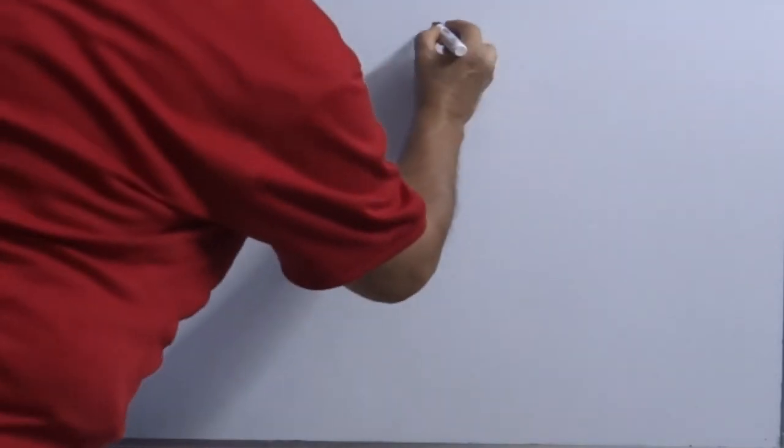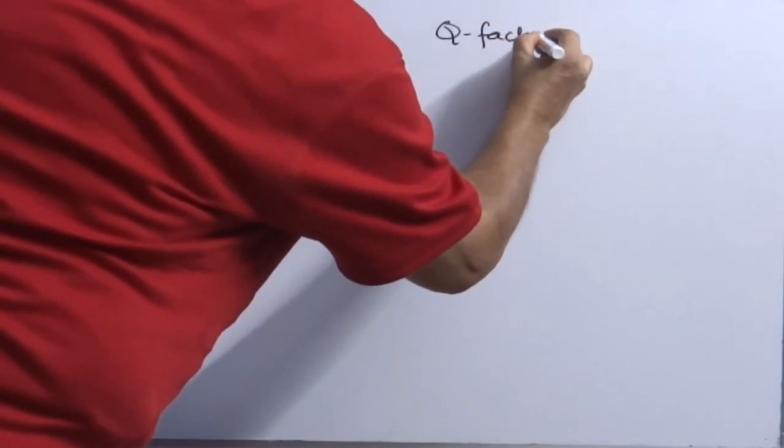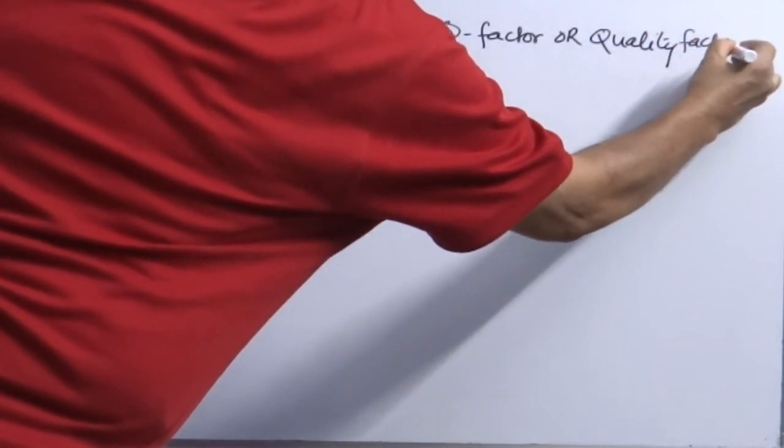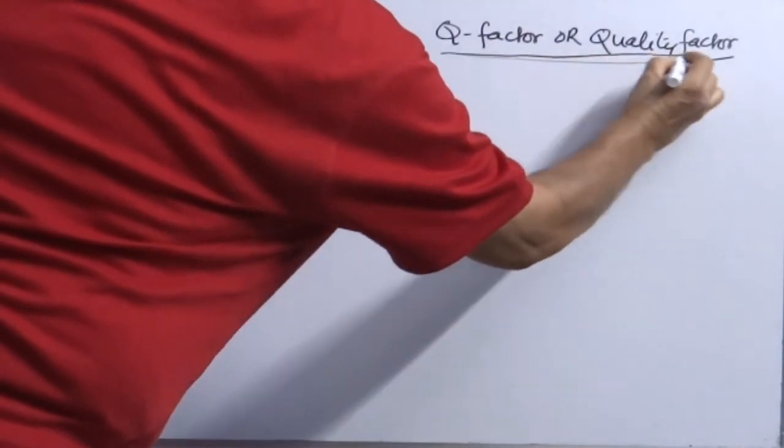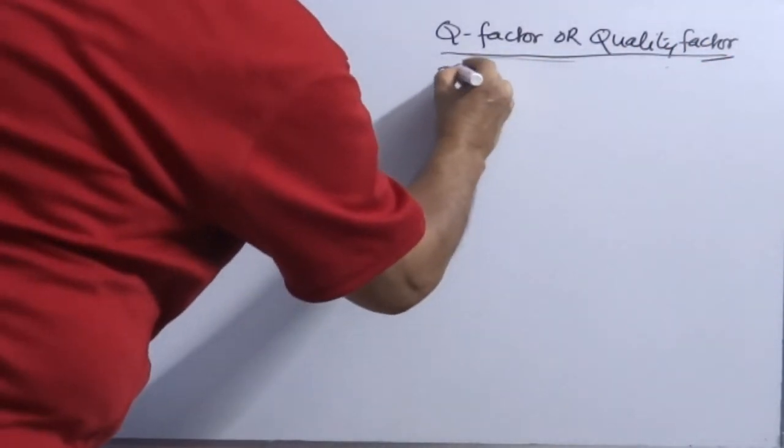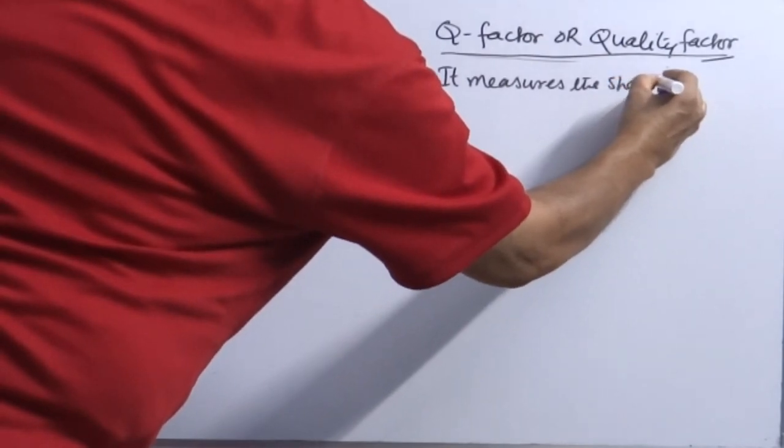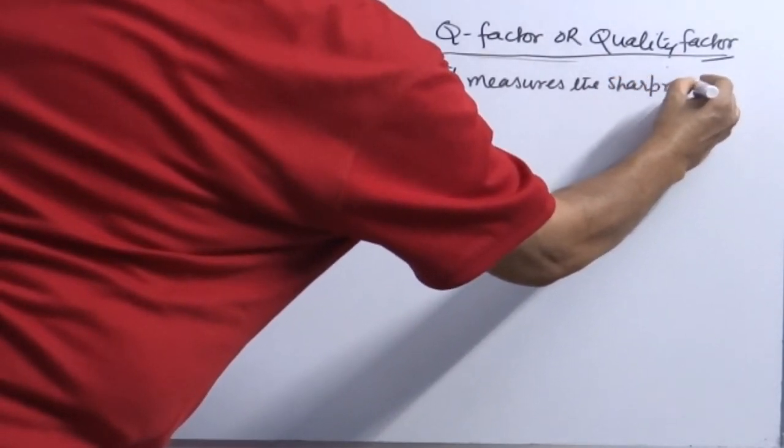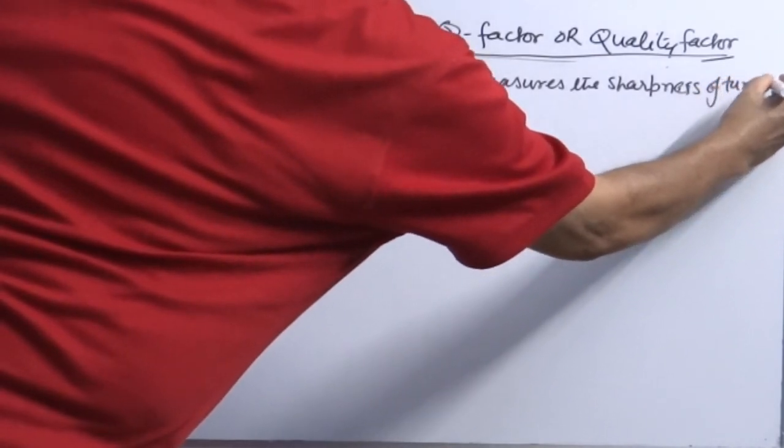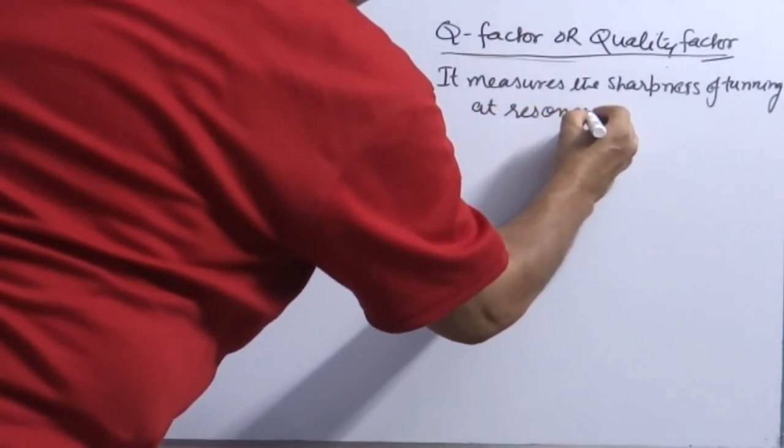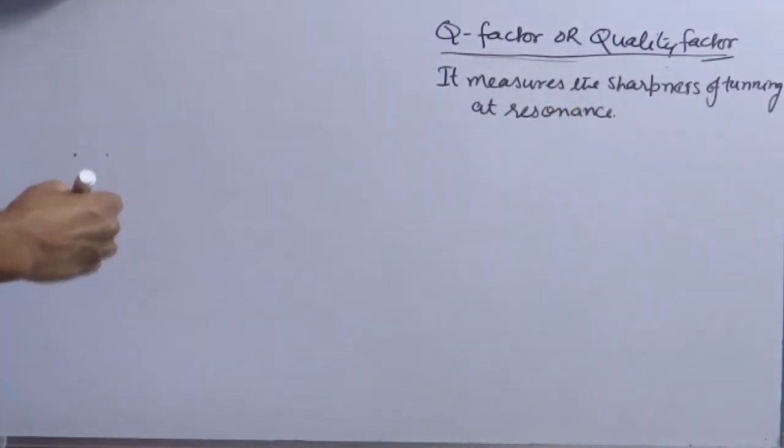Now for a resonance circuit, there is one very important characteristic which we have to study. What is that? Q factor. This is basically quality factor. What it does? It measures the sharpness of tuning at resonance. How good quality factor of your device is.